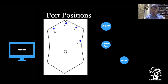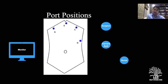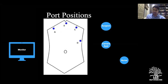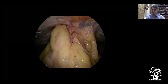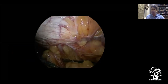For port positioning: C is the camera port at Palmer's point. Ports B, D, and A are then placed — D for tacking on the right, A for tacking on the left side of the mesh. The surgeon stands on the left side; the monitor is on the right at hip level, providing triangulation when working from B and D. Sometimes we keep the camera at B and work with C and D.